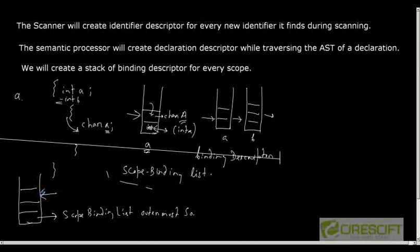To summarize the data structure: for every identifier, you create an identifier descriptor. For every declaration you create a declaration descriptor, which is scope-specific. To maintain scope information, you create bindings and maintain a stack of bindings for each identifier. In every scope, you have a list of such binding descriptors — called a scope binding list.